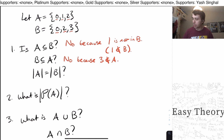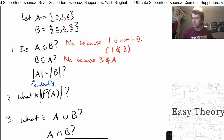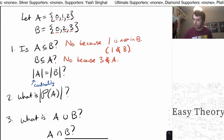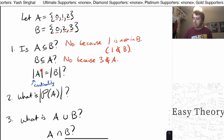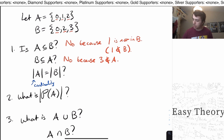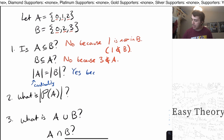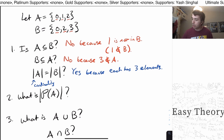Now this question asks: is the number of elements in A equal to the number of elements in B? These vertical bars indicate what is called cardinality — the number of elements in that set. The cardinality of A is 3 because there are 3 elements in it. The cardinality of B is also 3. It doesn't matter if the sets are different; as long as they have the same number of elements, the answer here is yes — each has 3 elements.